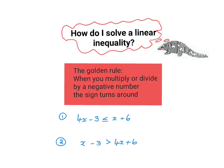How do I solve a linear inequality? There's one golden rule. You've been learning it from since Grade 9. When you multiply or divide by a negative number, the sign turns around.